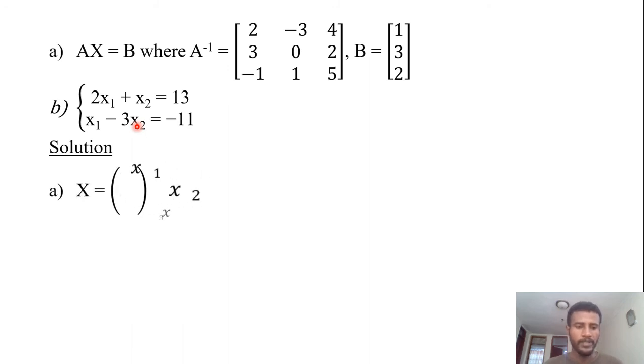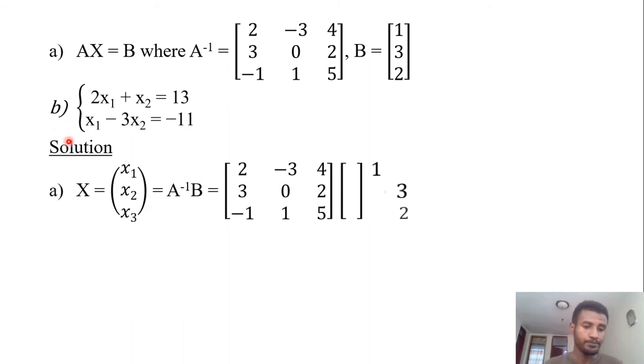Solution: X = [x₁; x₂; x₃], it's a column matrix, so we have to find those three values: x₁, x₂, and x₃. So X = A inverse times B. Here A inverse and B are both given.